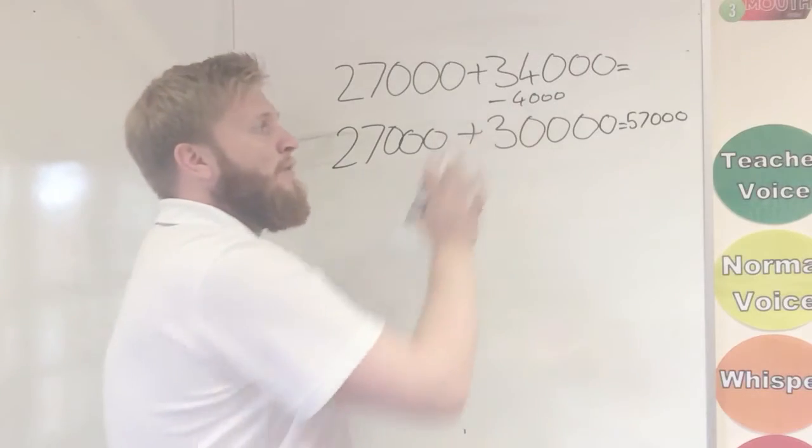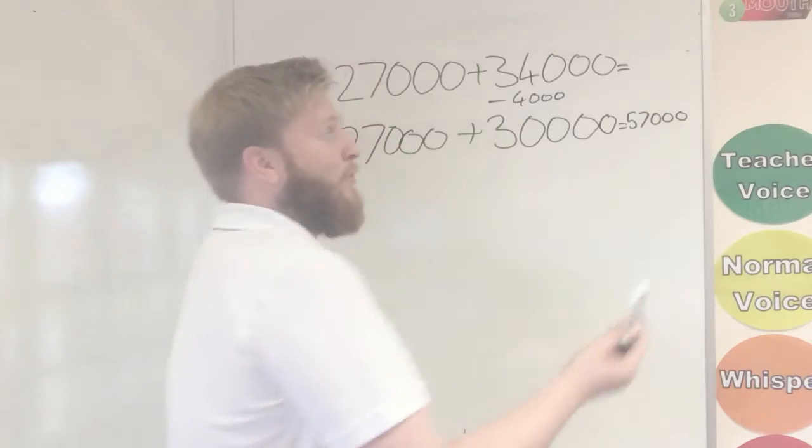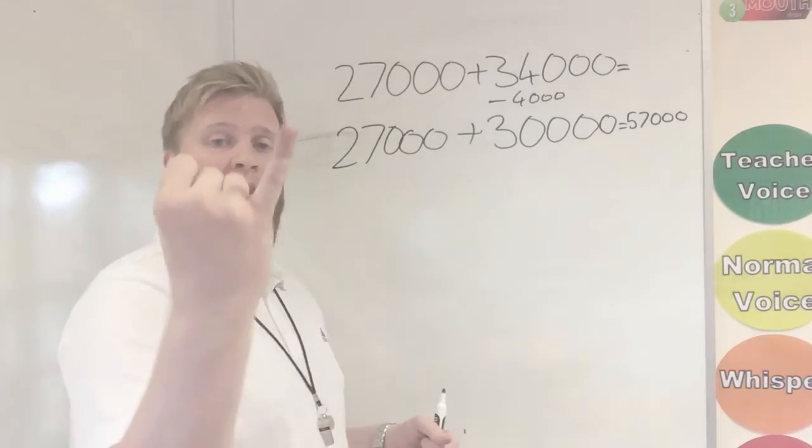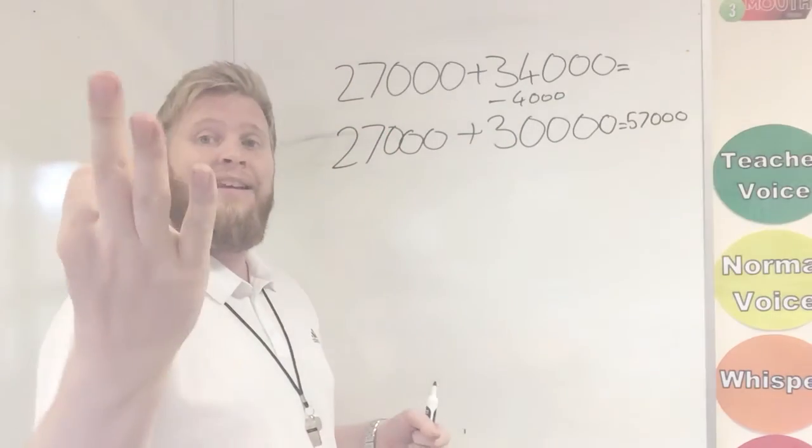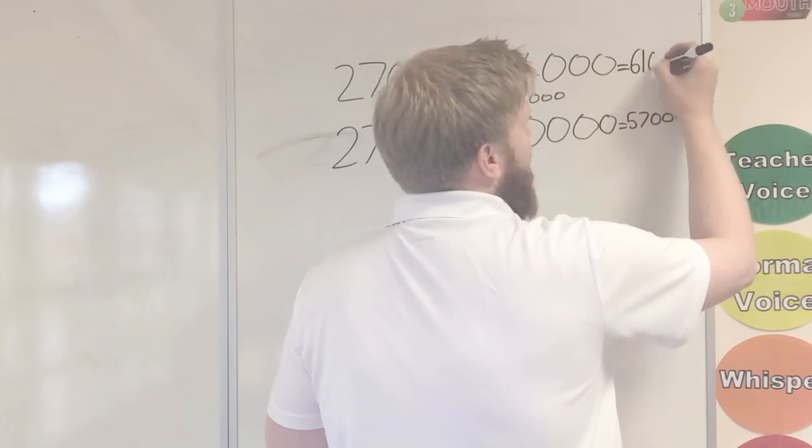Now remember, I took my 4,000 off, so now I need to add my 4,000 back on. So now I've added on and just count, 57,000, 58,000, 59,000, 60,000, 61,000. We have our same answer.